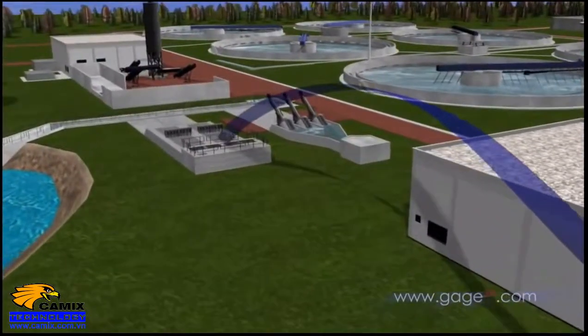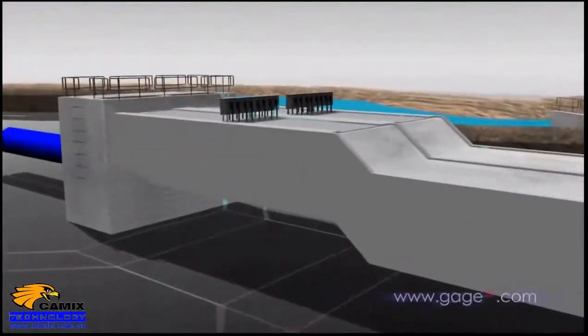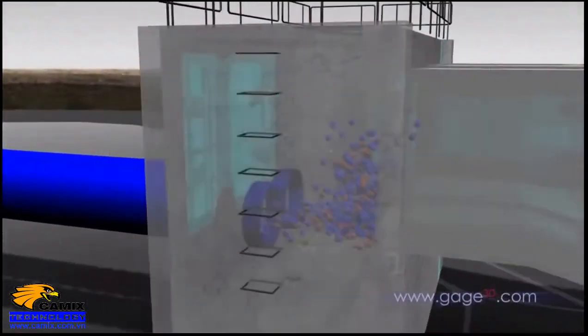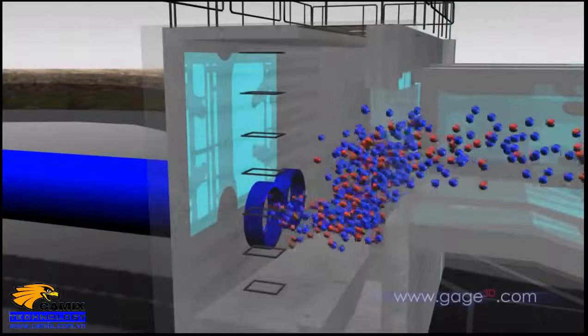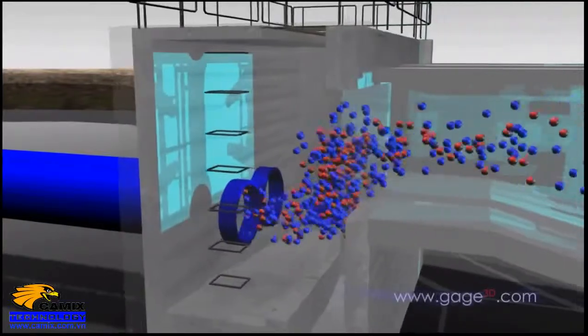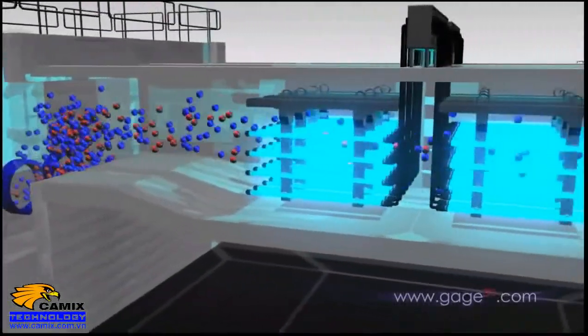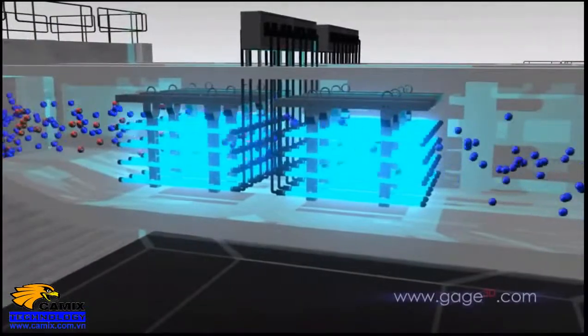This step removes any remaining bacteria or other microorganisms that could cause illness. Chlorine disinfection is the most widely used method, but ultraviolet disinfection, shown here, and ozonation are also common techniques.